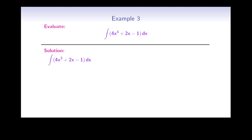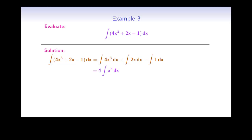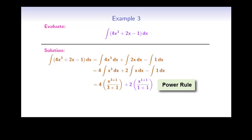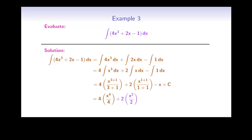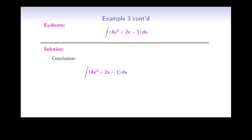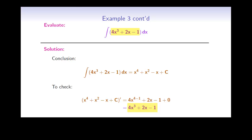Here is another example. To evaluate the integral of 4x cubed plus 2x minus 1 dx, we start by separating into three separate integrals. In each, we take out the constant and evaluate using the power rule — increasing the exponent by 1 and dividing by the new exponent. For the last integral, the integral of a constant equals that constant times x. Always add plus C, then simplify. The final answer is x to the power of 4 plus x squared minus x plus C. To check, we differentiate this and get 4x cubed plus 2x minus 1 — exactly the function we started with.